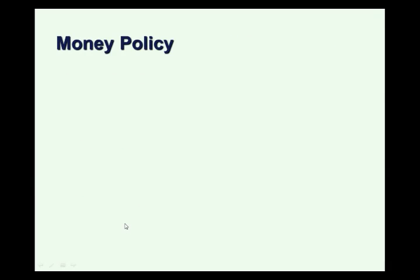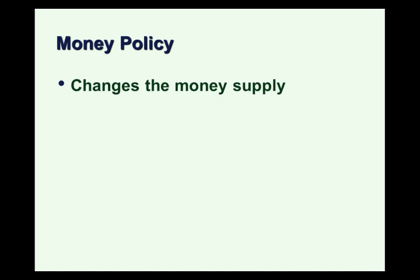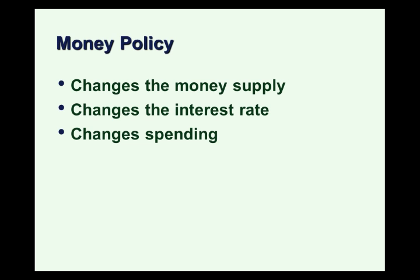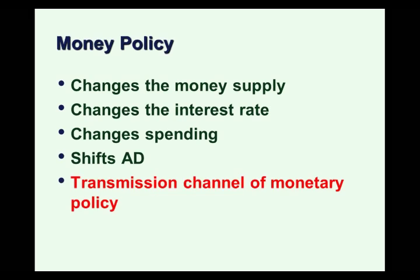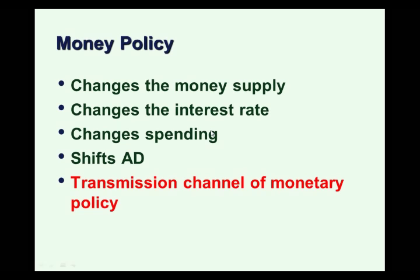With monetary policy, changes in the money supply using these tools mean a change in interest rates in the economy, which affects spending decisions. Lower and higher interest rates affect decisions from home buyers, people who want to buy a car, and firms that want to borrow money or issue bonds to expand production. Those changes can shift aggregate demand. This chain of events is known as the transmission channel of monetary policy. So monetary policy works indirectly into the aggregate demand curve by changing the cost of financing spending on goods and services in the U.S. economy.